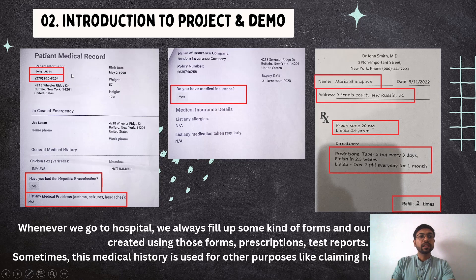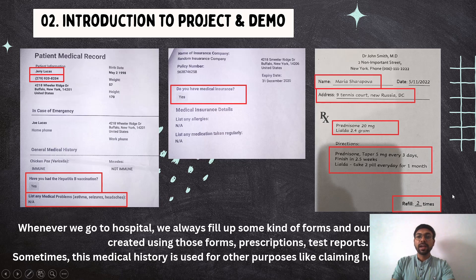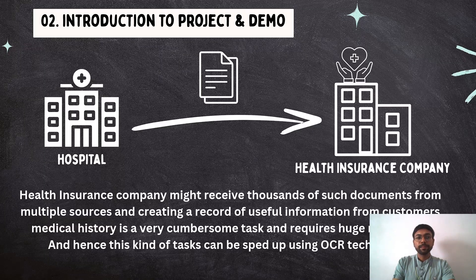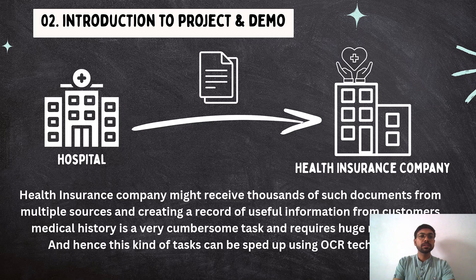We are going to extract information like patient name, phone number, vaccination status, other medical problems, and whether the patient has medical insurance. From the prescription, we can extract name, address, medicines given by the doctor, directions, and refill times. Consider a health insurance company — it might receive thousands of such documents from multiple sources, and creating a record of useful information from customers' medical history is a very cumbersome task requiring huge manpower. This kind of task can be sped up using OCR technology.